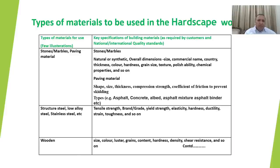Now, different types of materials are used for hardscape work. I have proposed a table which includes on the left side the type of materials used, and on the right side the key important characteristics or specifications that a designer must take cognizance of and incorporate in the detailed designing process. For example, for stones and marbles, the designer has to specify whether it is natural or synthetic, overall dimensions, size, the commercial name of the marble, country of origin, thickness, color, hardness, grain size, textures, polishability, and chemical properties.